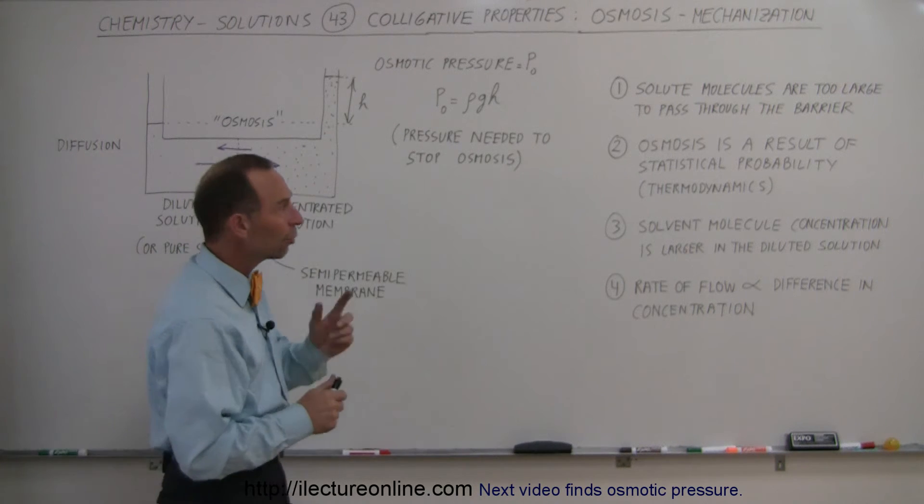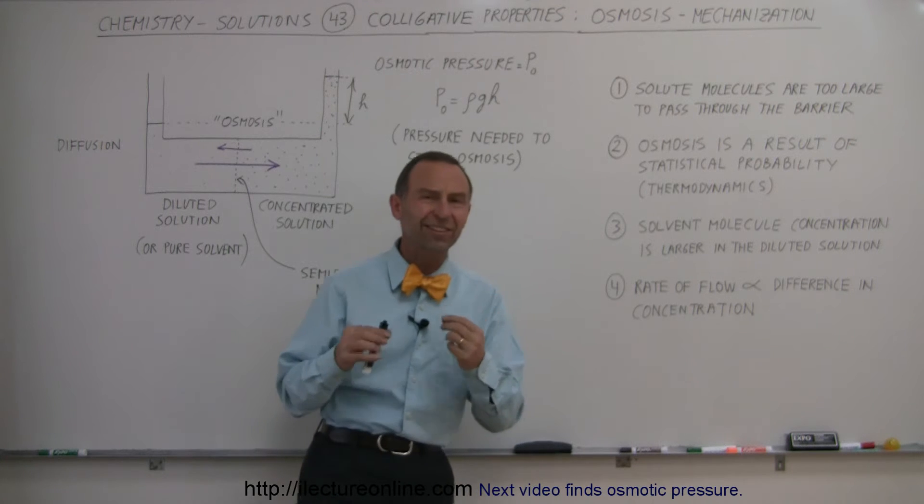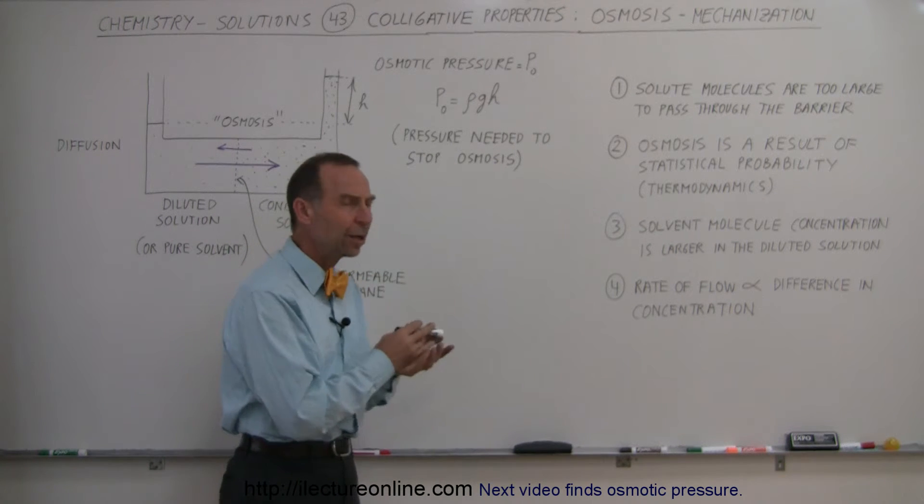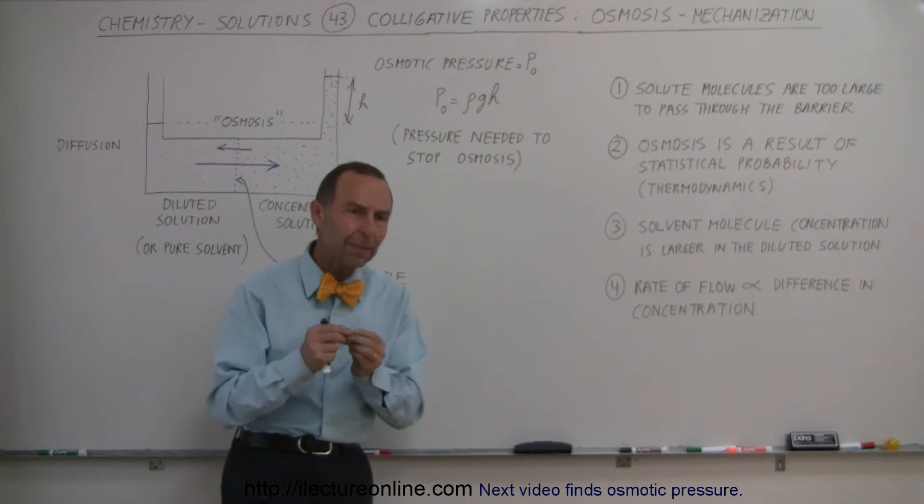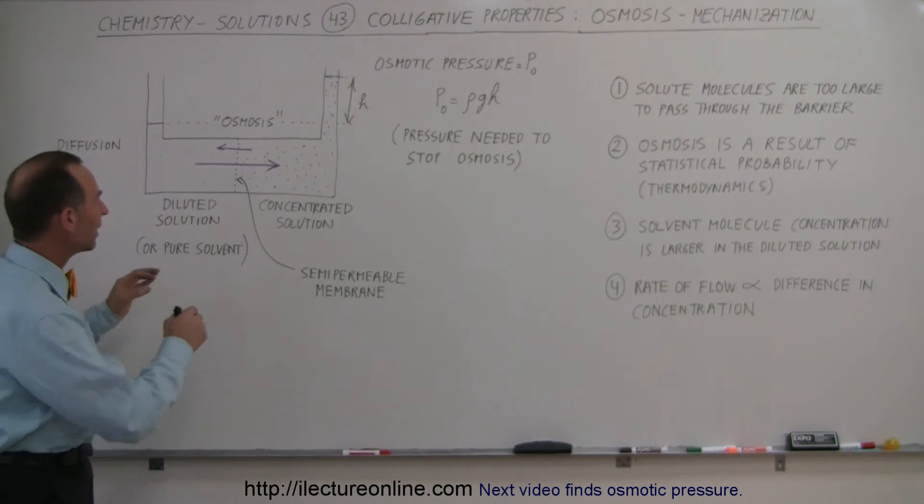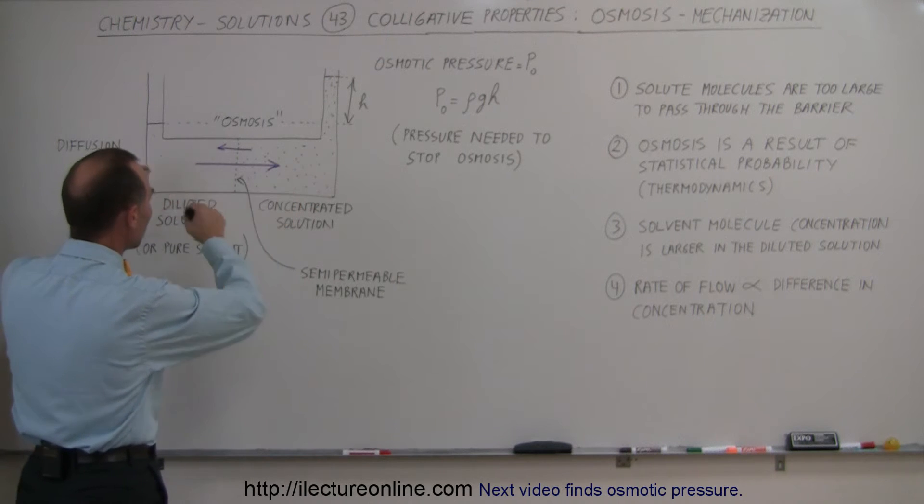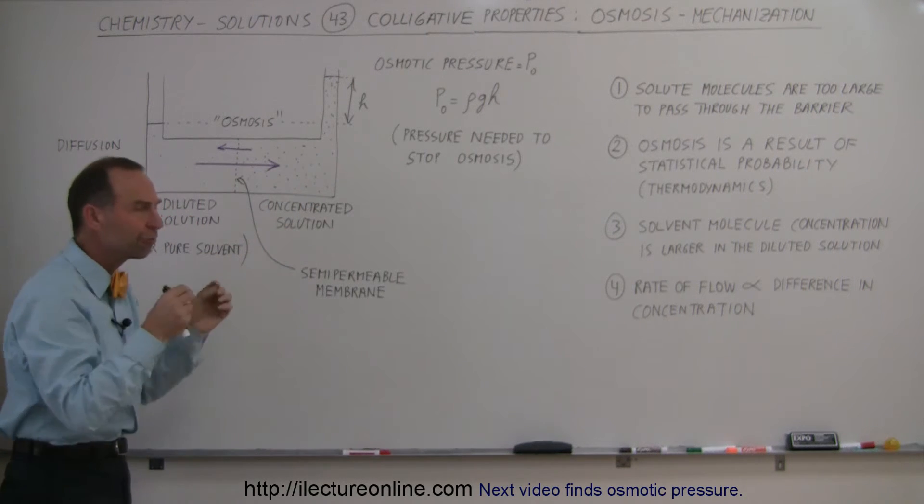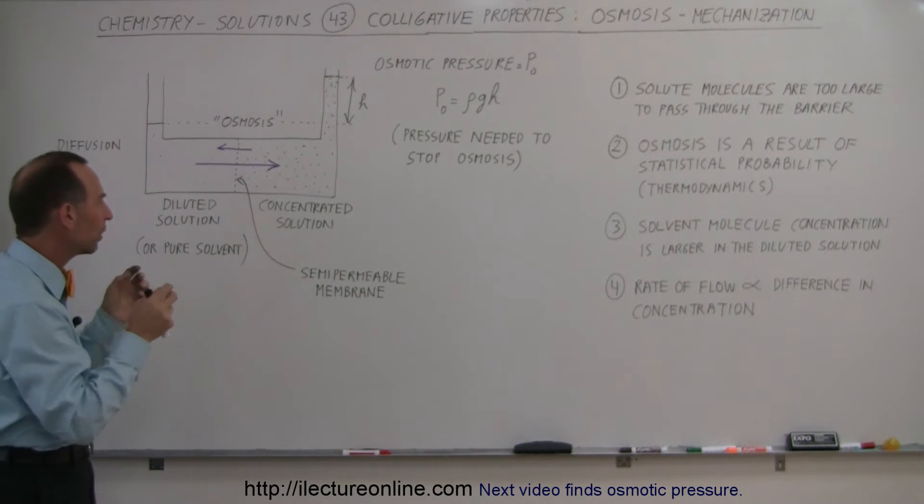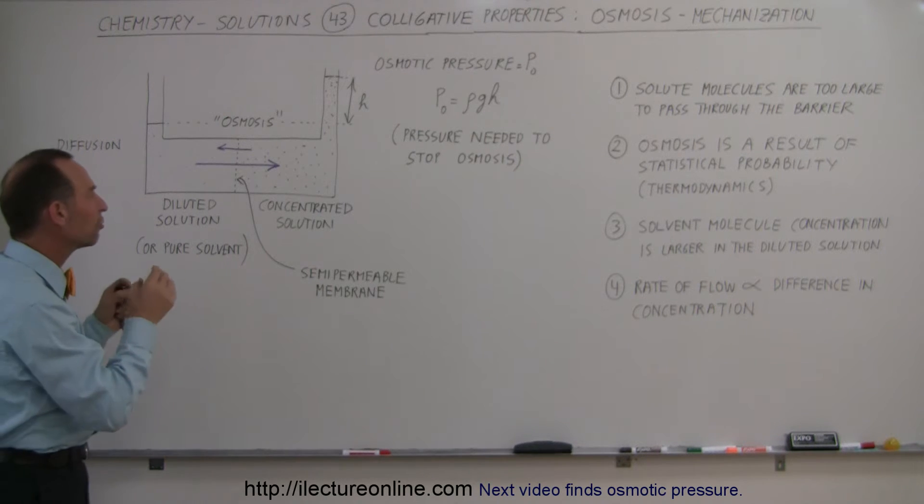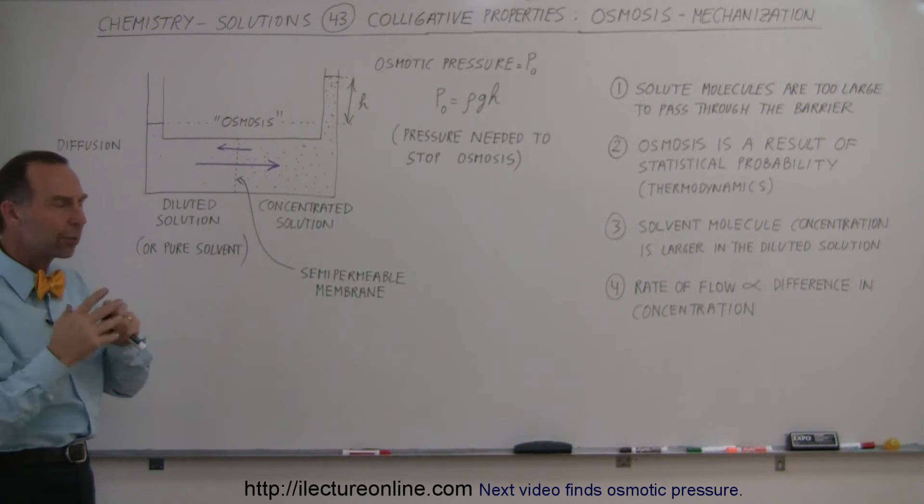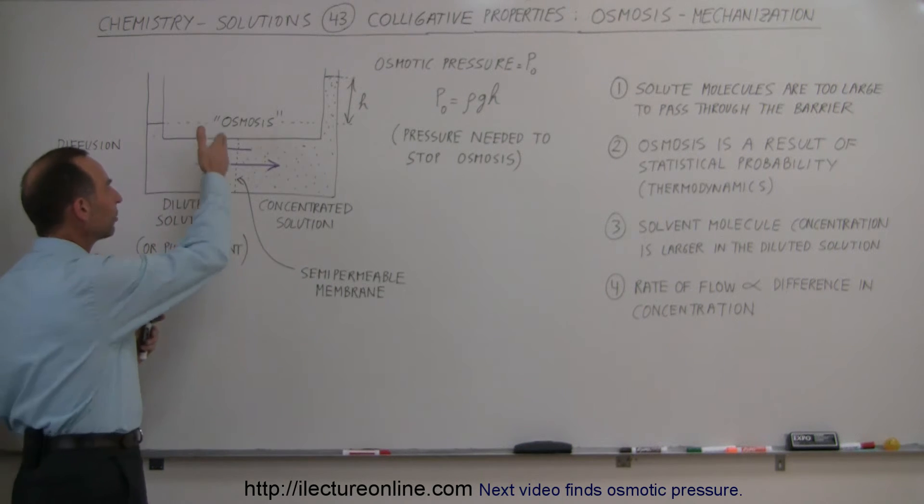The second is that osmosis is a result of statistical probability, not a result of forces driving them across the barrier. It's a thermodynamics thing. The way you have to look at it is, on both sides of the membrane, molecules are constantly vibrating at very high vibrational speeds. There's a lot of kinetic energy within each molecule, and they're moving around one another, rolling over one another, just constantly on the move. When they get to the membrane...